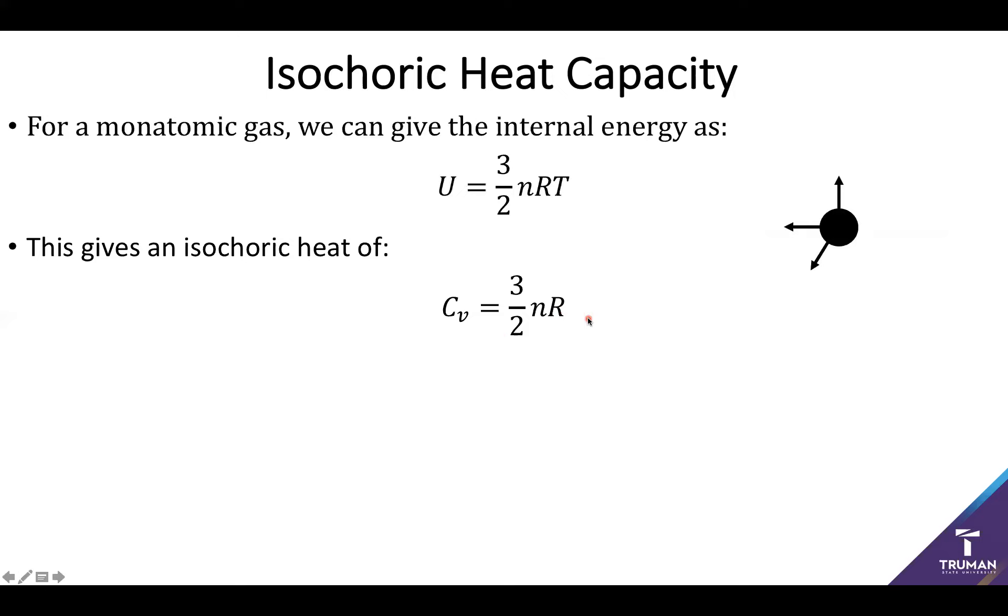However, this only gets us so far, because it turns out we can only study noble gases so long before we start to get a little bit bored. So let's say I want to scale this up to diatomic gases, which ends up being rather relevant, as the two most common gases in the atmosphere are both diatomic, oxygen and nitrogen. So in these cases, I get an extra half kT of motion from my two rotational degrees of freedom, which gives me an internal energy on the macro scale of five halves nRT, or a heat capacity of five halves nR.